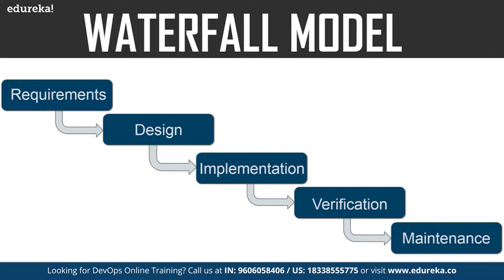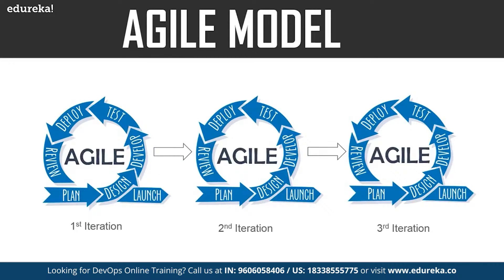The next model is the agile model. In this model, the software is broken down into various iterations, each with phases such as planning, design, and development. The duration of each iteration is generally two to eight weeks. You release the software in the first iteration, gather feedback from end users, incorporate those changes into the second iteration, and repeat. This model was better than the previous one, but it too had drawbacks. While it brought agility to the development team, the operations team did not come up to speed, causing constant conflict that hampered the pace of software development and release.